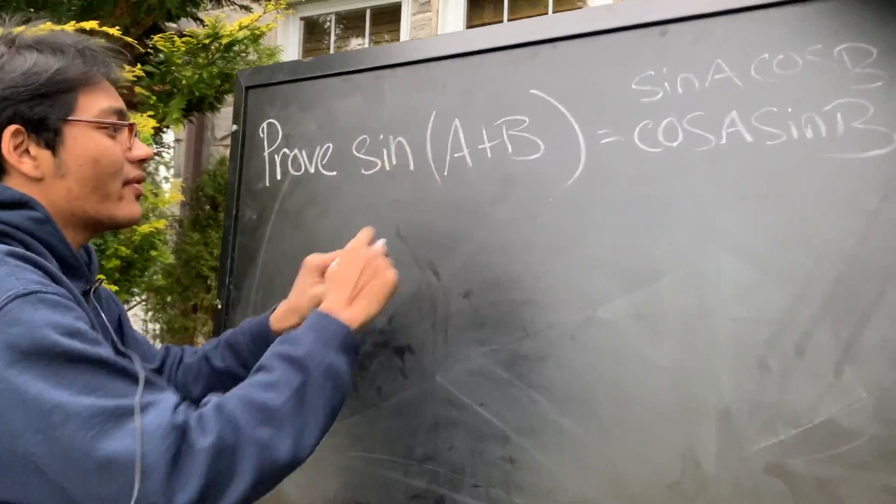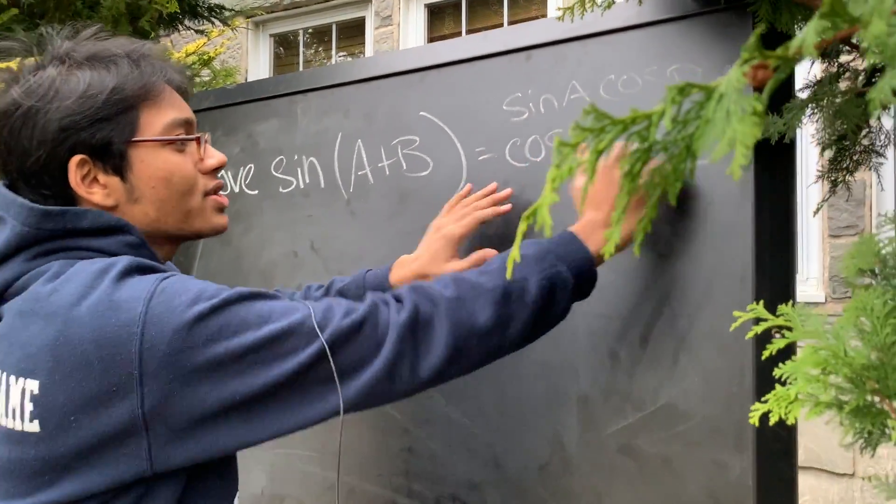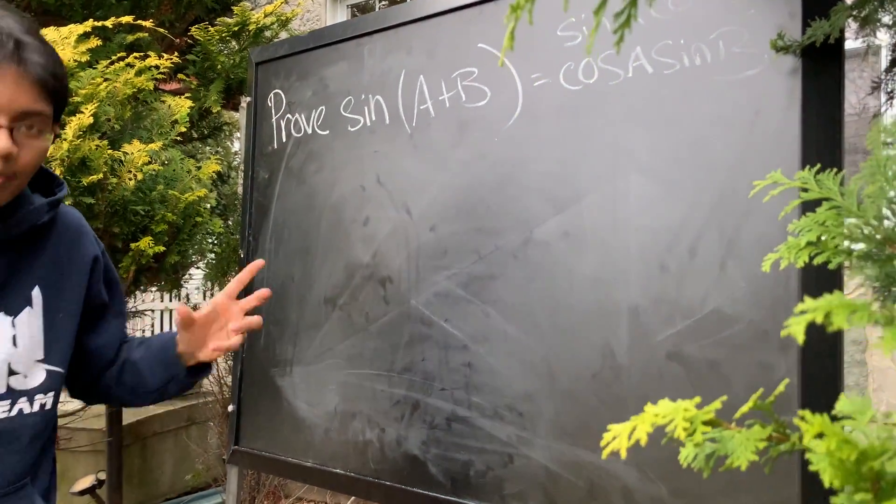Prove that the sine of the sum of two angles, A and B, is equal to sine of A cosine of B plus cosine of A sine of B. We have to prove that.